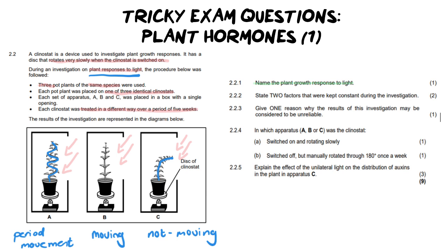The next question says: state two factors that were kept constant during this investigation. Please be very careful — this is one of the reasons I chose this question. When they say what was kept constant, you may only give answers from the paragraph. You cannot come up with your own variables. What were some things kept the same? They kept the species the same, they kept the clinostats identical, they kept the time period the same, and they all used the same box setup with a single opening. You could give any two of those four, but you may not give your own.